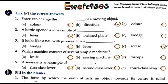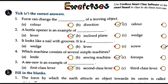MCQ 2: A bottle opener is an example of which type of machine? MCQ 3: Which machine consists of several simple machines joined together? The options are knife, sawing machine, and forceps. The answer is sawing machine, as it is a compound machine made of several simple machines.